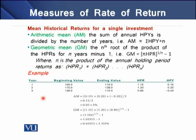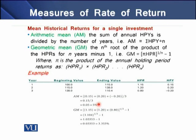In a three-year example: year one has a beginning value of 100 and ending value of 115. The ending value of year one becomes the opening value of year two, and so on. Using these values, we compute the holding period return and then the holding period yield for each year. The arithmetic mean of these yields is 5 percent per year, while the geometric mean is 3.35 percent — arithmetic mean is greater than the geometric mean.